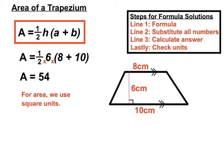For area we use square units. Instead of centimetres, which we have in the question—8 centimetres, 6 centimetres, and 10 centimetres—we're going to use square units. So our answer will be 54 centimetres squared.